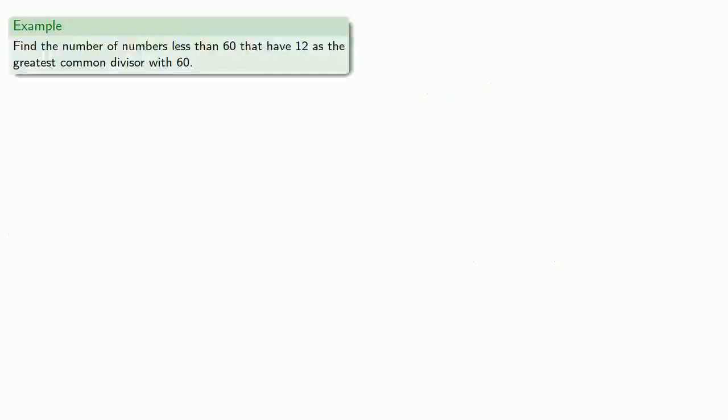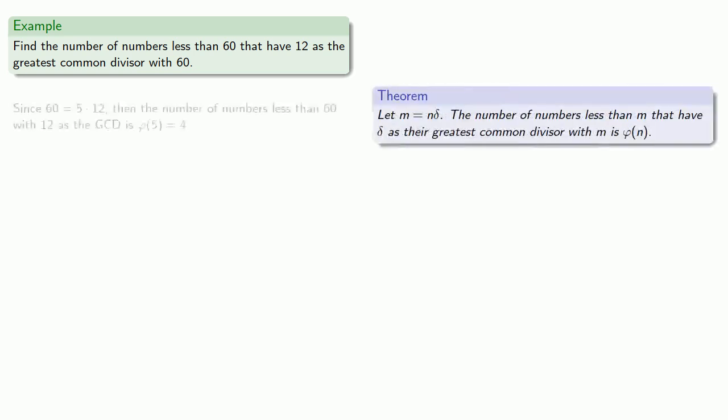For example, let's find the number of numbers less than 60 that have 12 as the greatest common divisor with 60. Since 60 equals 5 times 12, the number of such numbers is phi of 5, which is 4. You can think about this as phi of the other divisor.